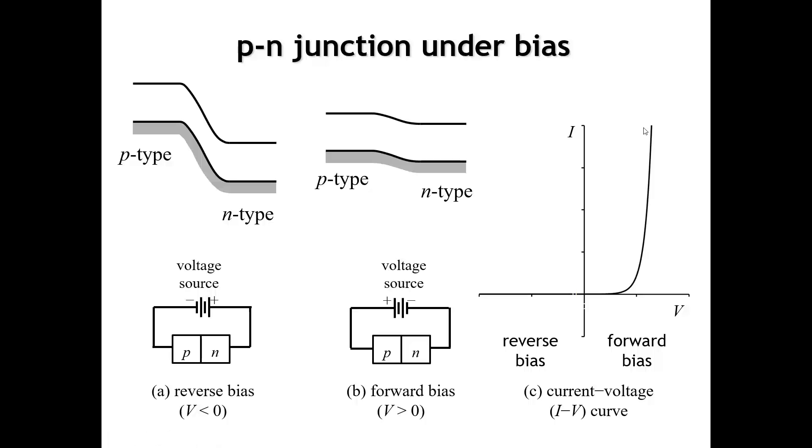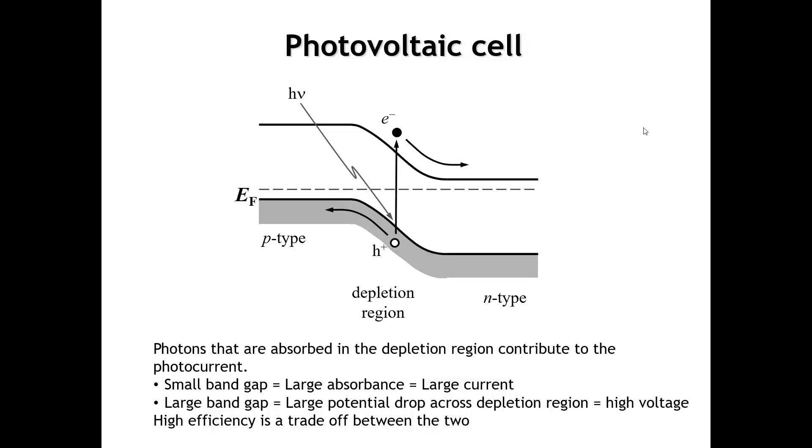So you can use a rectifier, for example, to convert alternating current into direct current, because you're only allowing the electrons to go one way across the P-N junction. Another really important application of a P-N junction would be either in a photovoltaic cell or a light-emitting diode. The principle of a photovoltaic cell is that photons come in, they excite electrons from the valence band up into the conduction band, and if that photon is absorbed in the depletion region, now you have a built-in potential that can separate the electron and the hole so they don't just recombine. So the electrons are swept off to the N-type semiconductor, and the holes are swept off to the P-type semiconductor.